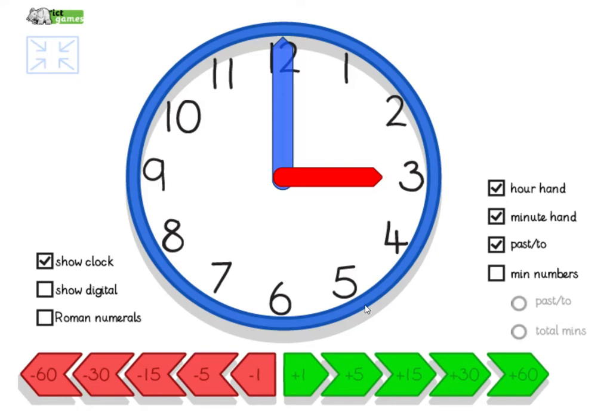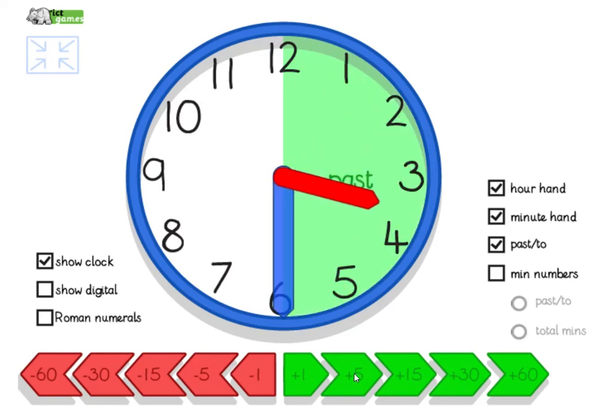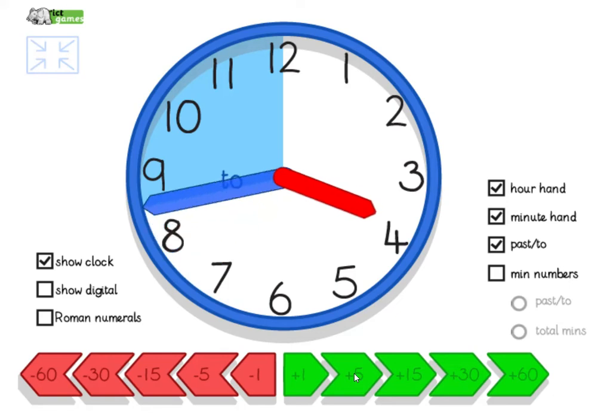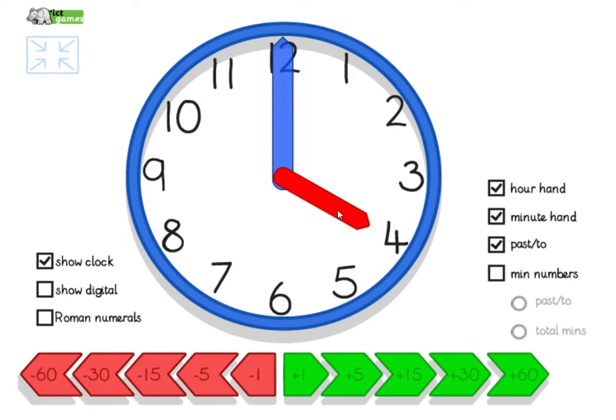Let's try that again. So at 3 now, where will this hour hand be once this minute hand has gone all the way around? Yeah, it's going to point at the 4, isn't it? Let's see. 5, 10, 15, 20, 25, 30, 35, 40, 45, 50, 55, 60 or 0. Look, there it is, it's pointing at the 4. So what time is it now? 4 o'clock. Fantastic.